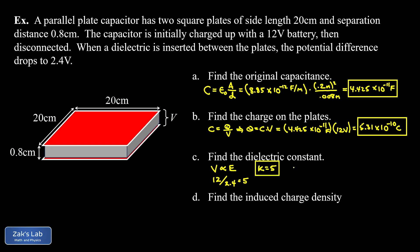For a more formal argument: the potential difference after inserting the dielectric is E times d, and E between the plates with a dielectric is E0 divided by kappa. So E times d equals V0 divided by kappa, where V0 times d equals the original voltage V0. Solving for kappa gives V0 divided by V, which is 12 divided by 2.4 — again, the dielectric constant is five.